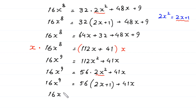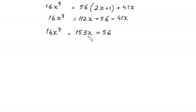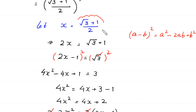So 16x to the power 9 equals 112x plus 56 plus 41x, which gives 112x plus 41x equals 153x, and 16x to the power 9 equals 153x plus 56. In place of x we substitute the value square root of 3 plus 1 over 2.